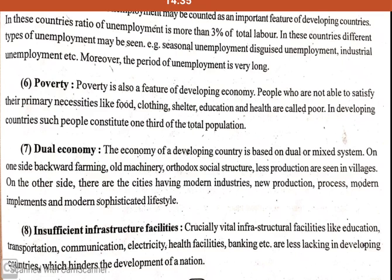The seventh feature is dual economy, where two types of economies operate simultaneously. In our country, many areas still have backward farming with old machinery and orthodox social structures producing less — like village areas. On the other side, there are cities with modern industries, new production methods, and new technologies. Both roles play a part in developing our economy.